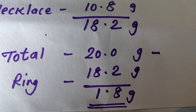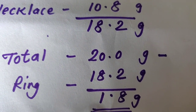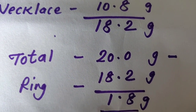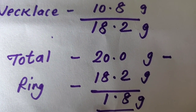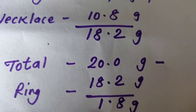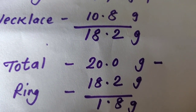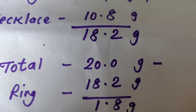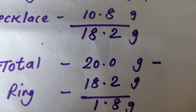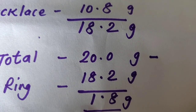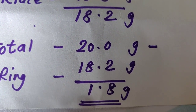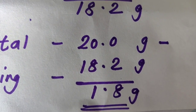The total weight of all three pieces is 20 grams. Subtracting the bangle and necklace total of 18.2 from 20, the weight of the ring is 1.8 grams.